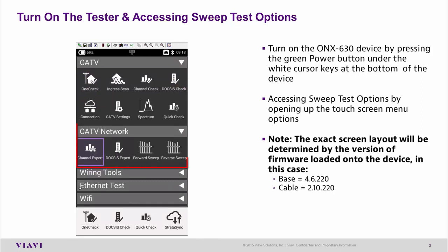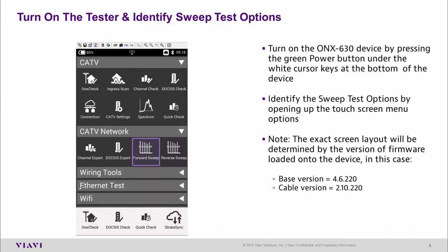Sweep testing can be found under the CATV network option. We can now see forward and reverse sweep options that are available. Simply select the test you'd like to run and then hit enter or tap the screen to launch the test.